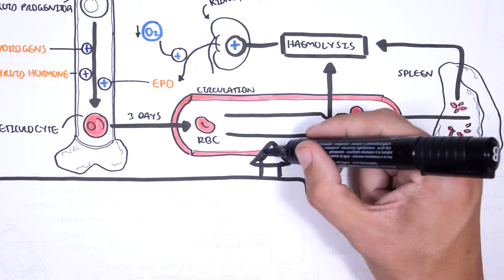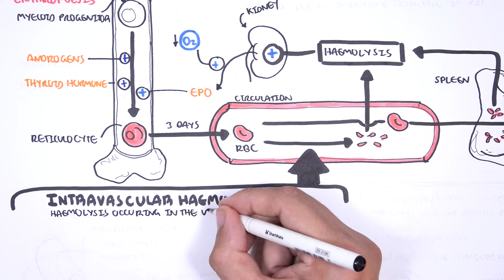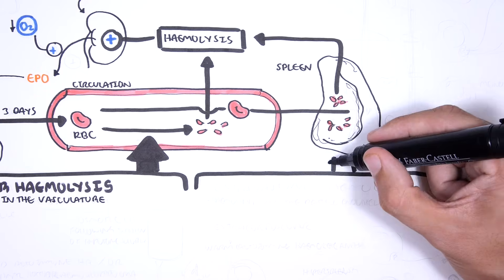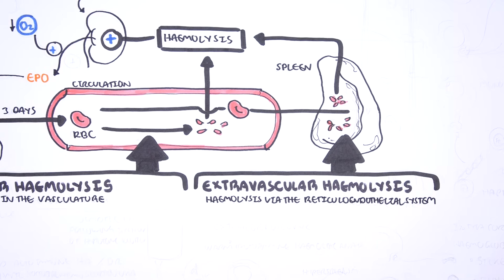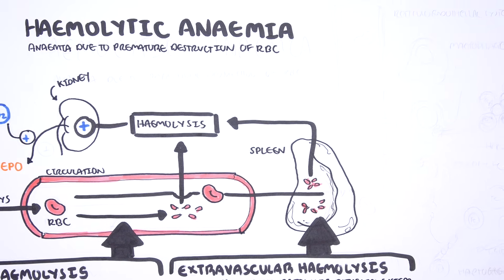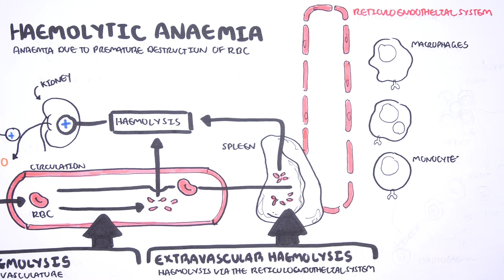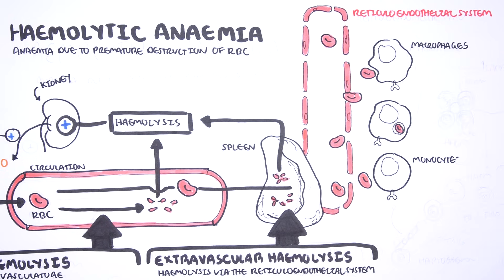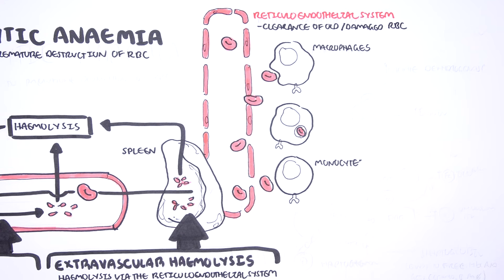Hemolytic anemia is due to premature destruction of red blood cells and can be grouped into intravascular hemolysis, occurring in the vasculature, and extravascular hemolysis, occurring via the reticuloendothelial system — also known as the mononuclear phagocyte system — situated in organs such as the spleen and liver. The reticuloendothelial system houses many monocytes and macrophages, which normally clear old and damaged red blood cells, but in hemolytic anemia, this system works in overdrive.